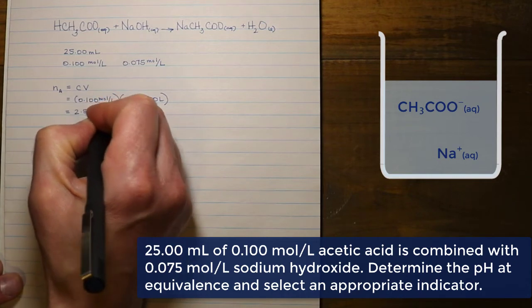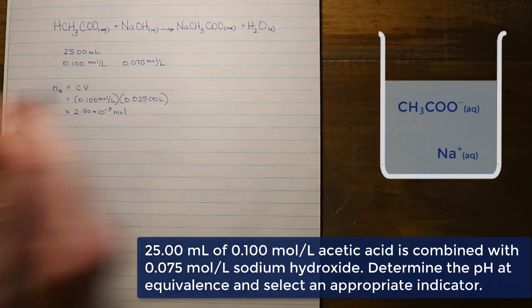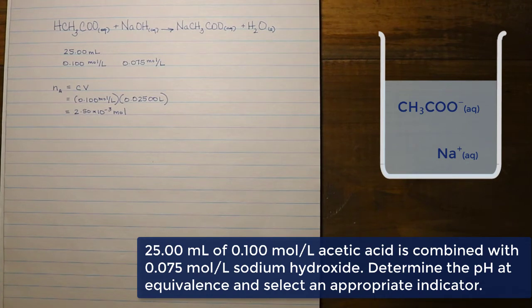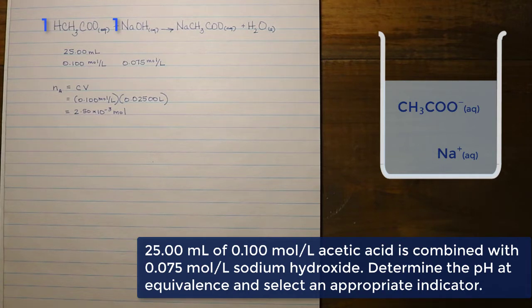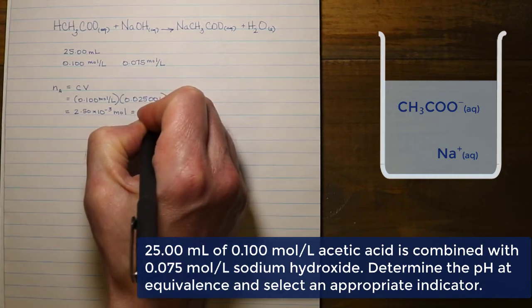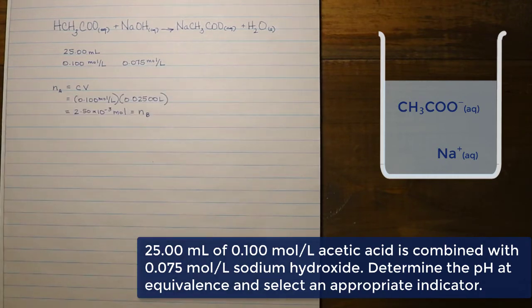It's important to note that the acid and the base are equivalent in terms of their number of moles. In this reaction there is a one-to-one ratio between the acid and the base — one mole of acid is needed to react with one mole of base. So if we know the number of moles of acid, we can determine that that is also the number of moles of base required to neutralize the acid at this volume and concentration.